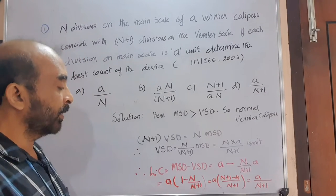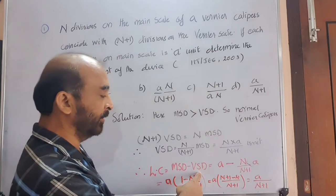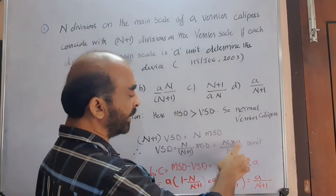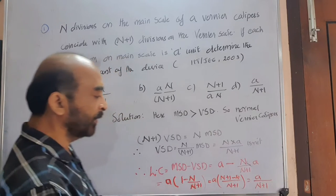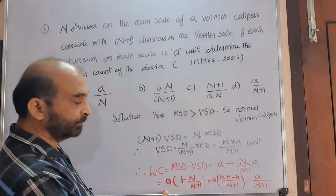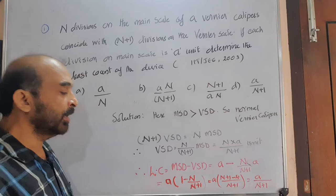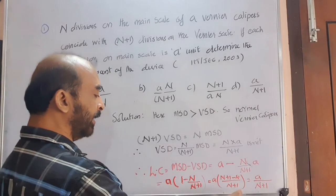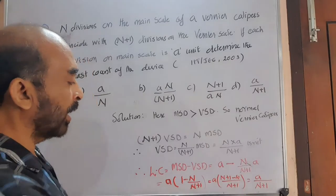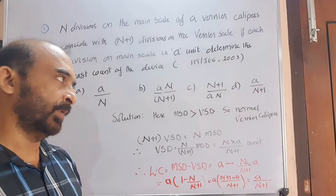We know least count is main scale division minus vernier scale division. Main scale division is A, vernier scale division is NA divided by N plus one. So: A minus NA over N plus one. Take A outside: A times one minus N over N plus one. Taking N plus one as common denominator and simplifying, the least count becomes A divided by N plus one.